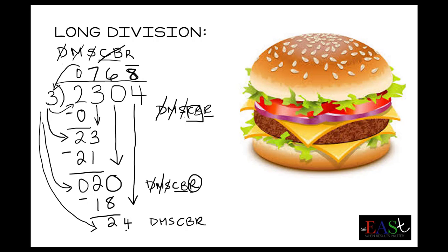8 times 3 is 24. You put that there. So you've done divide, you've multiplied. Now you've got to subtract. So 24 take away 24 is going to be 0.